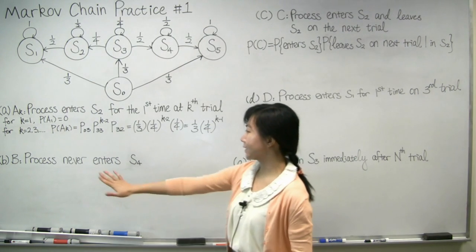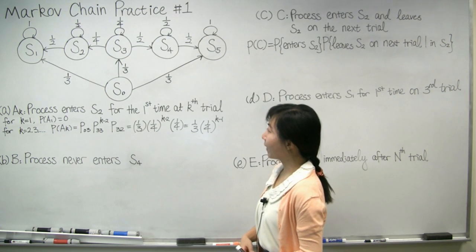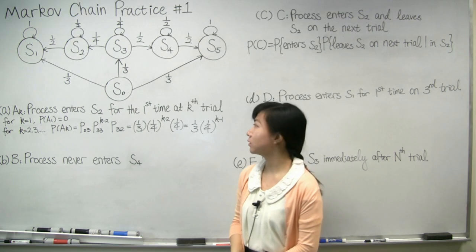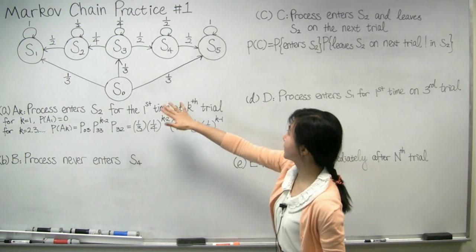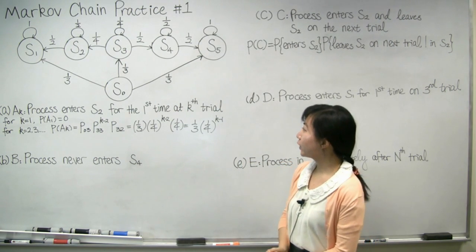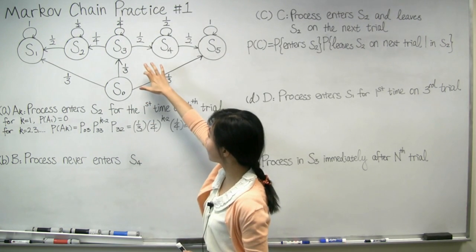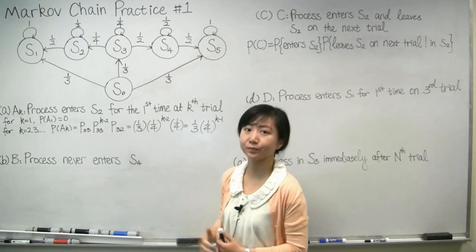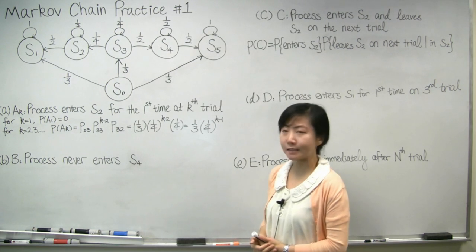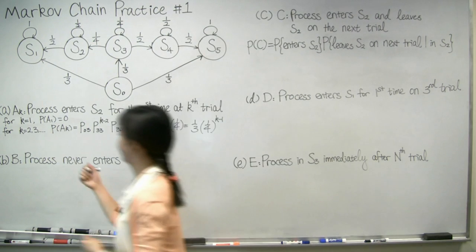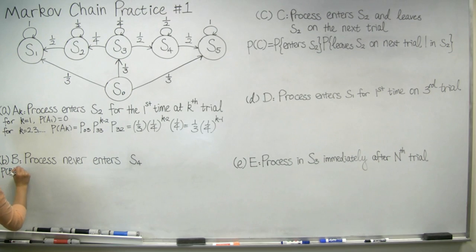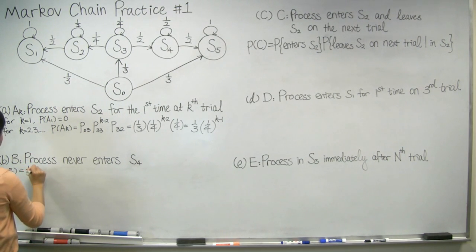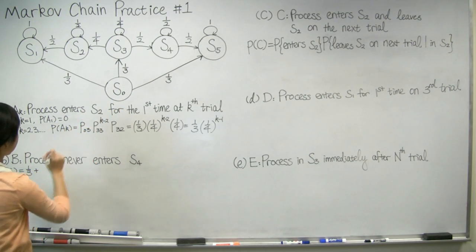For part B of the problem, we have to calculate the probability that the process never enters S4. This event can happen in three ways. The first way is that the process makes a transition from S0 to S1 on the first trial and is stuck in S1 forever. The second way is that the process makes a transition from S0 to S5 on the first trial and is stuck in S5 forever. The third way is that the process makes a transition from S0 to S3 on the first trial, and then makes a transition from S3 to S2 on the next state change, so it will never be able to go to S4.